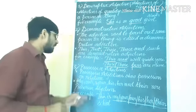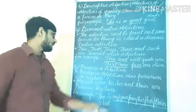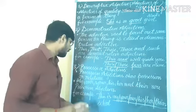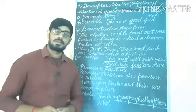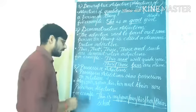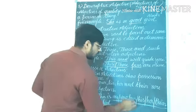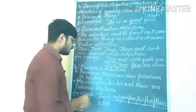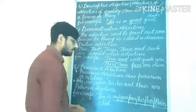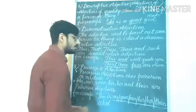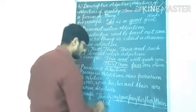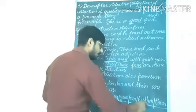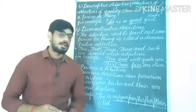Possessive adjectives show possession or relation. My, our, your, his, her, and their are possessive adjectives. For example: 'This is my school. This is your school. This is our school. This is his school. This is her school. This is their school.' Here 'school' is the noun and all of my, our, your, his, her, their are possessive adjectives.